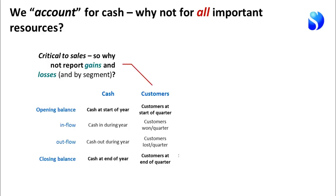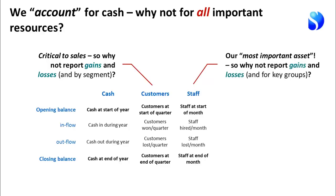So many companies say 'staff are our most important asset' in their annual report. Well, if staff are our most important asset, why are we not reporting gains and losses of those staff — and doing so for key groups in the business? How many staff do we have at the start of the month? How many did we hire? How many did we lose? How many did we end up with at the end of the month?